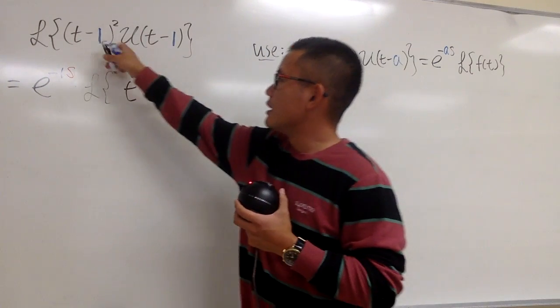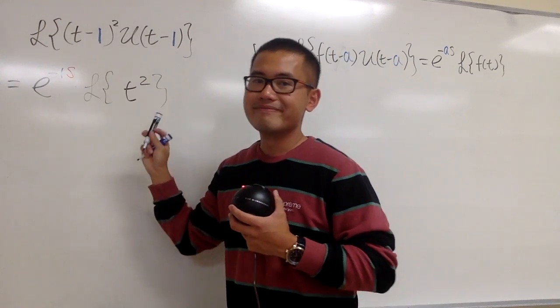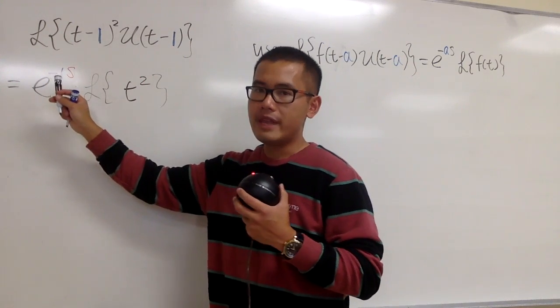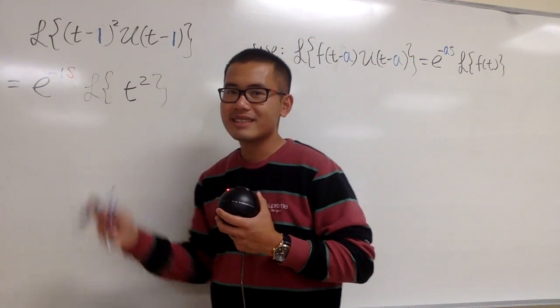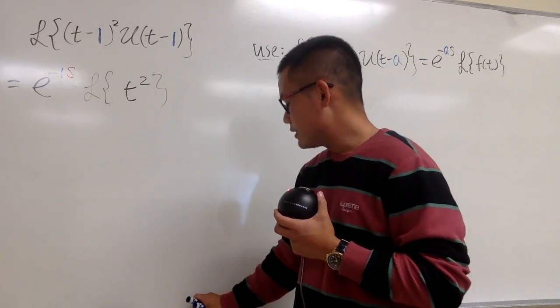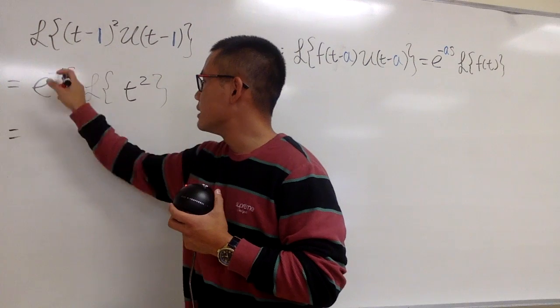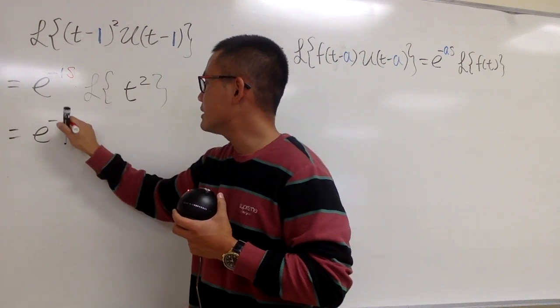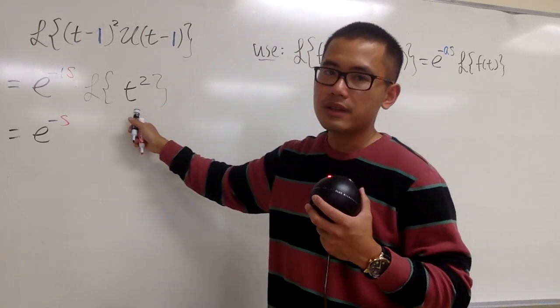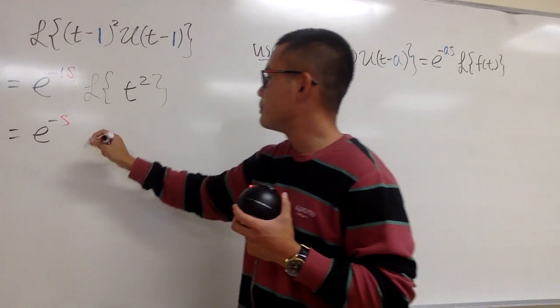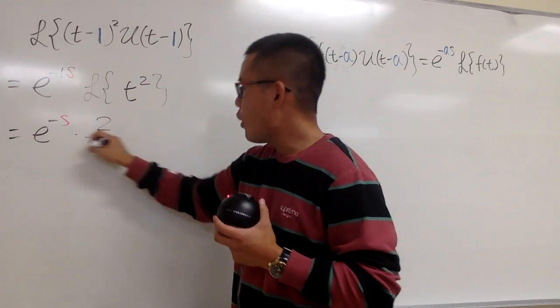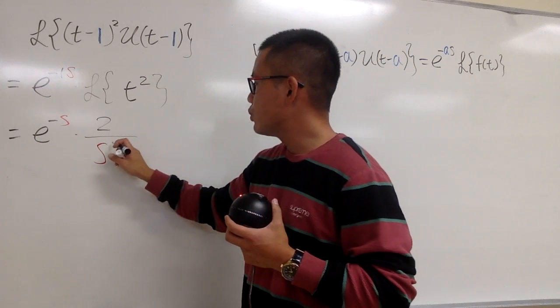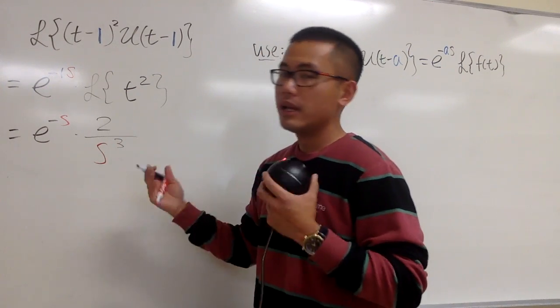So this is the translation in T theorem, and you just have to make sure whenever you have the unit step function, most likely you end up with e to the something. Now we will finish this up. As we know, this is the same as e to the negative s, and then the Laplace transform of t to the second power will first be 2 factorial, which is the same as 2, over s to the 2 plus 1, which is the third power, like that.